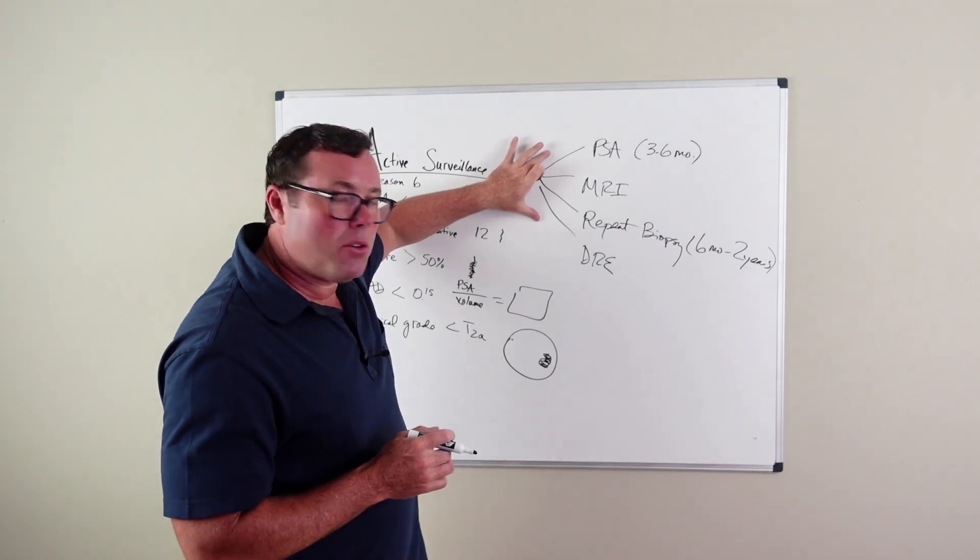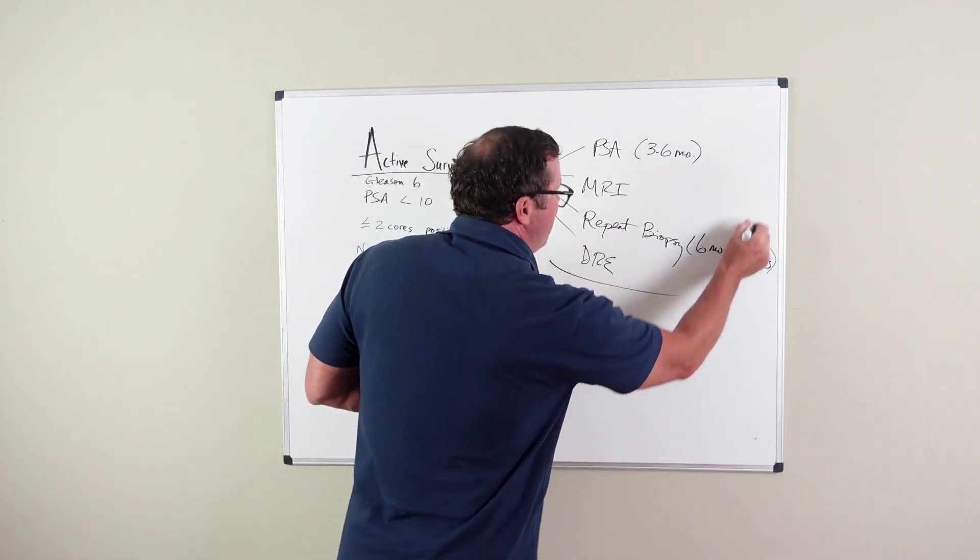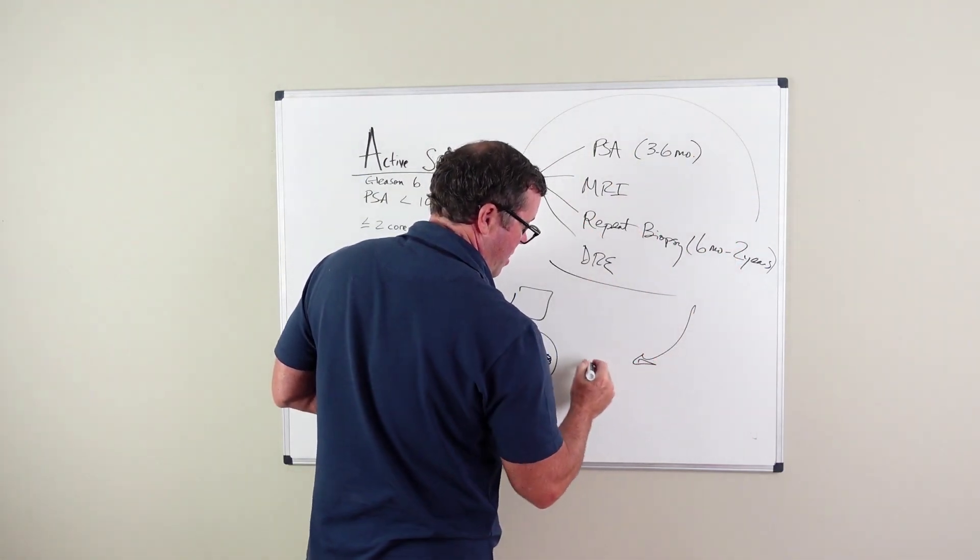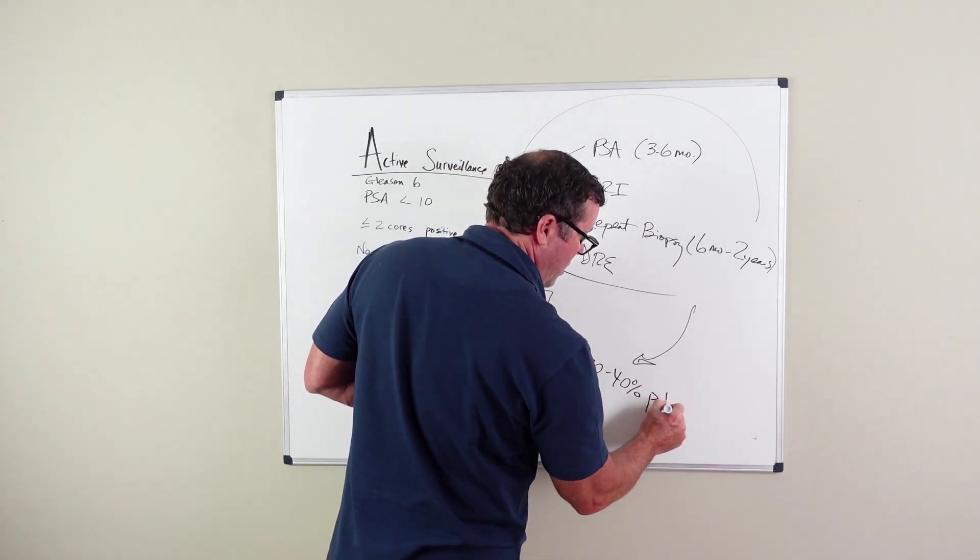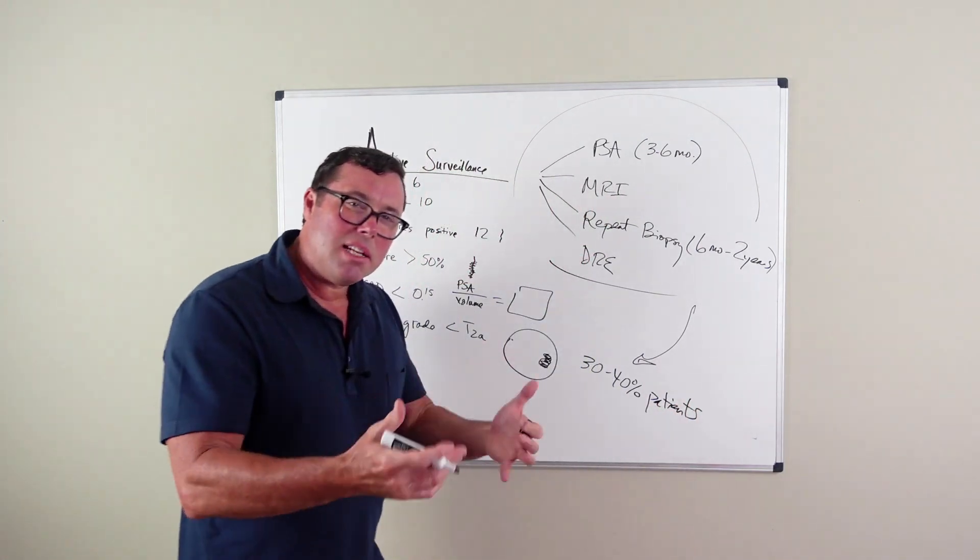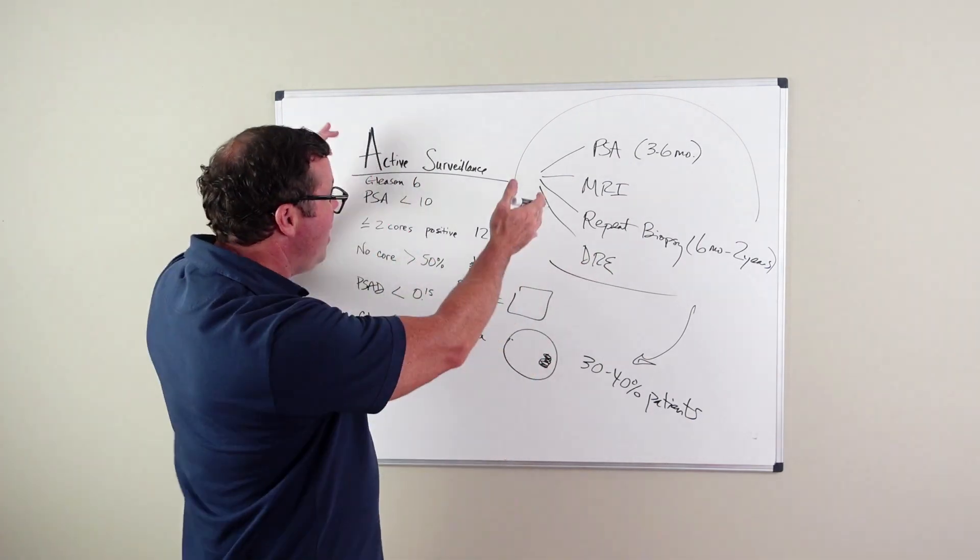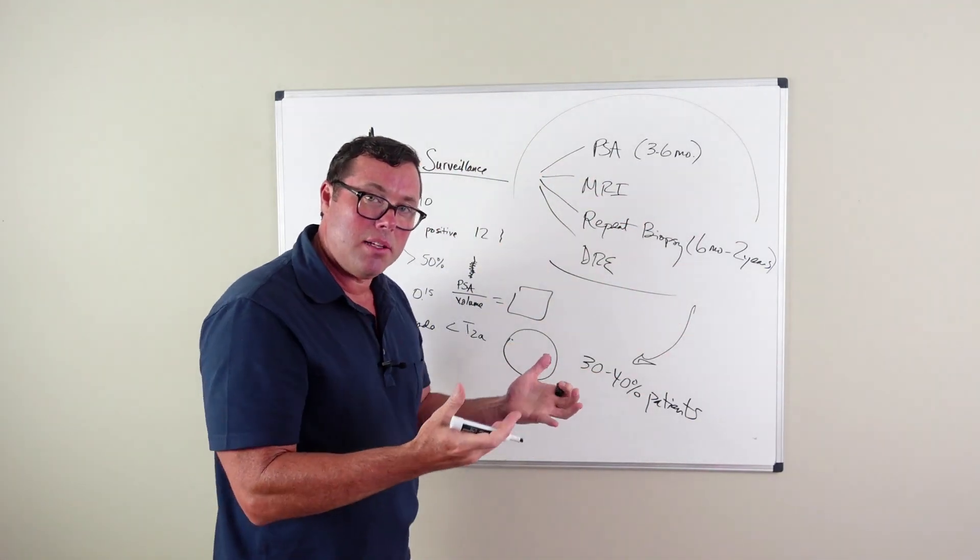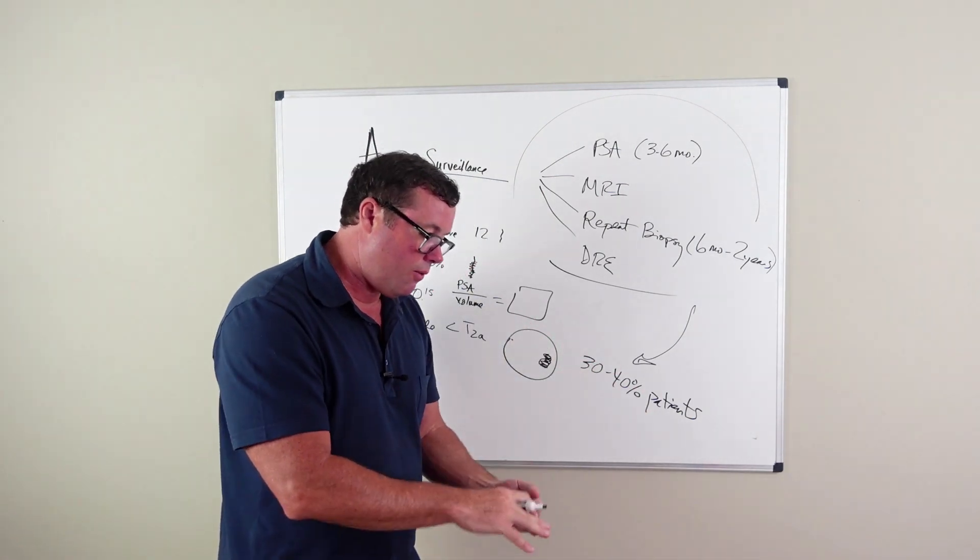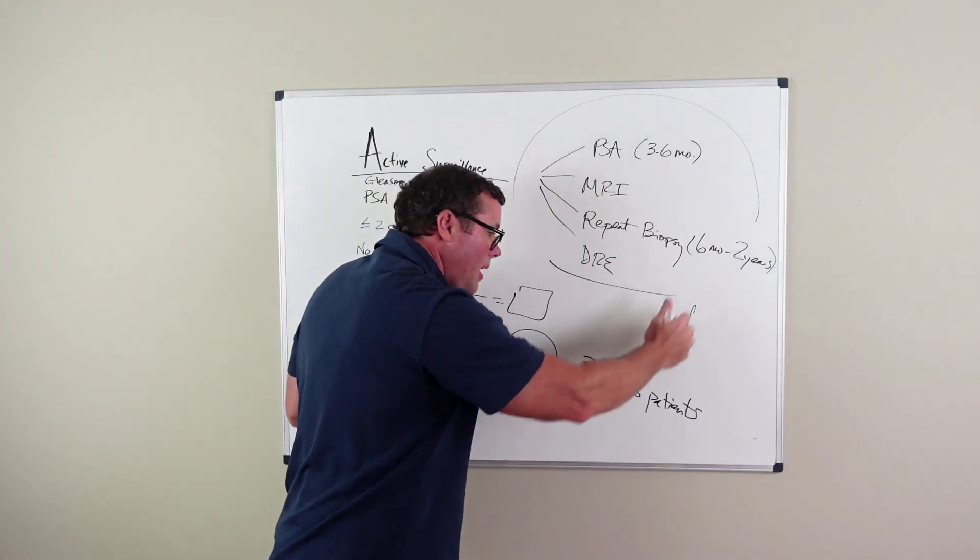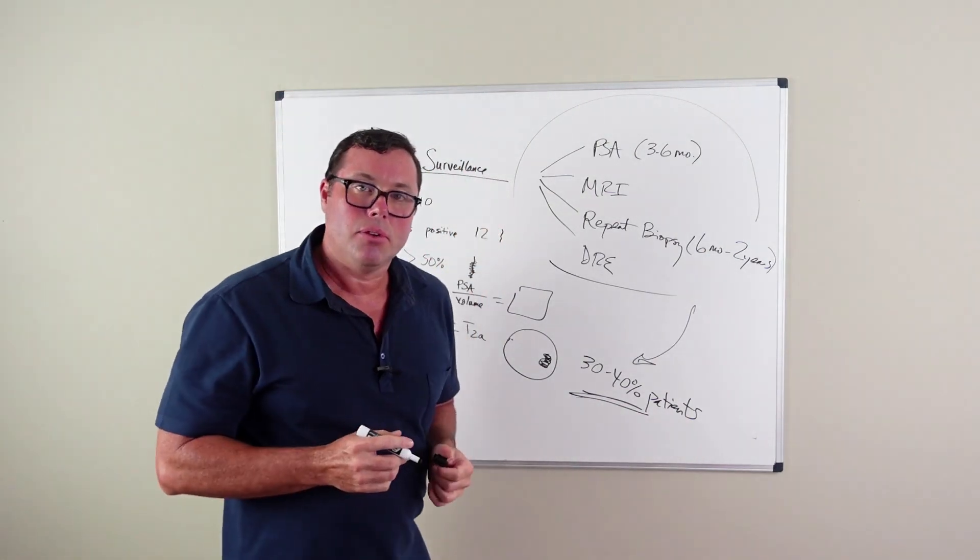So this is active surveillance. This is what is done for active surveillance. Now, of all the patients that do this, maybe 30 to 40% of patients over their lifetime will need some type of definitive treatment for their prostate cancer because of failure of this active surveillance. And whether that's surgery or radiation or focal treatment or brachytherapy, another type of treatment is needed in 30 to 40% of patients who are doing active surveillance.